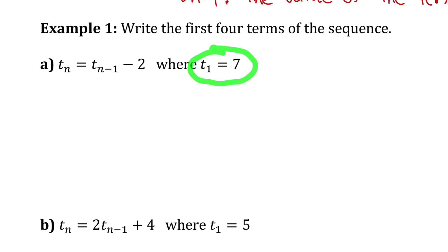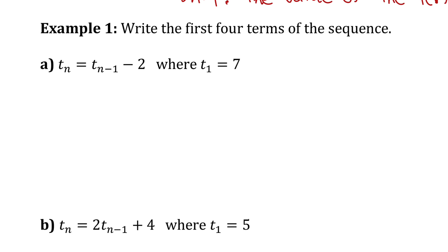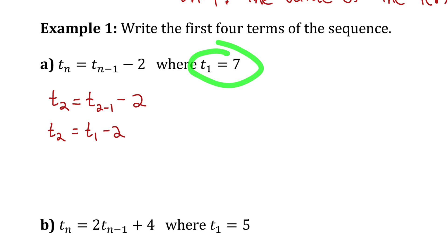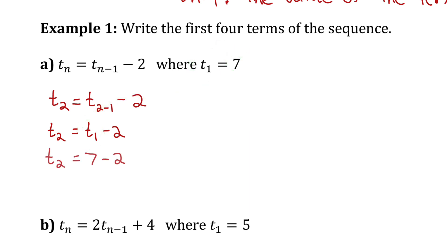The reason why we need that is because to find term 2, we're going to need the value of the previous term, which is term 1. Let's find term 2 by subbing in 2 for n. Notice when I simplify, 2-1 is 1, and I can see that to find the value of the second term, I take the value of term 1 and subtract 2. And I know term 1 is 7, so I replace it with 7, which means the value of the second term is 5.